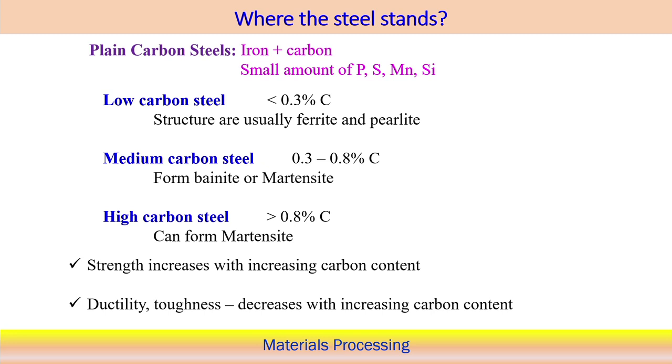In general, strength increases with increasing carbon content. Low carbon content means the material is close to wrought iron with low strength, but increasing carbon percentage increases strength. However, ductility and toughness decrease with increasing carbon percentage. This is the general property trend seen across different kinds of plain carbon steels.